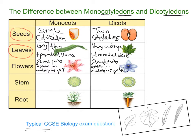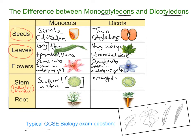If we look at the stem, we're referring particularly to the vascular bundle — the xylem and phloem. In the monocot, the vascular bundles are scattered throughout the stem, as you can see in this image. But when we look at a dicot, they're arranged in a very clear ring.